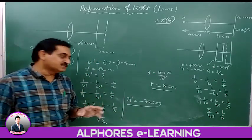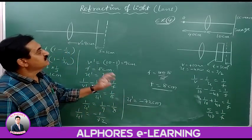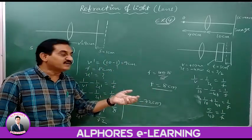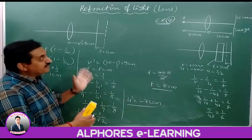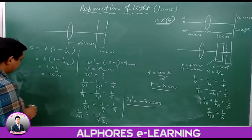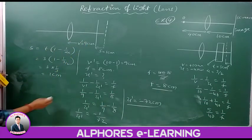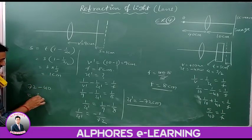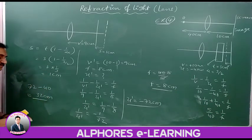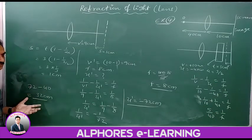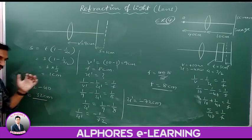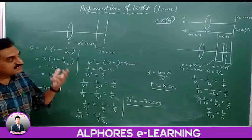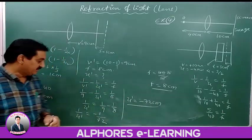If the question asks how much the object needs to be shifted: the initial object position was 40 cm and the final position is 72 cm, so the object must be shifted by 72 − 40 = 32 centimeters away from the lens to get the same image on the screen after introduction of the glass plate.